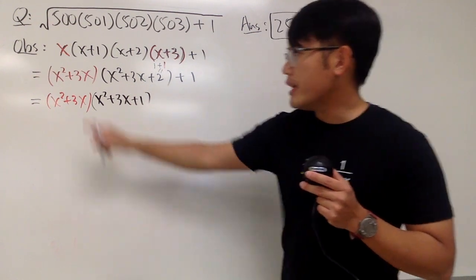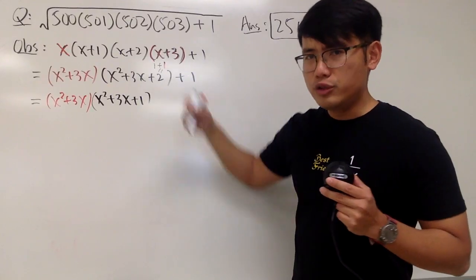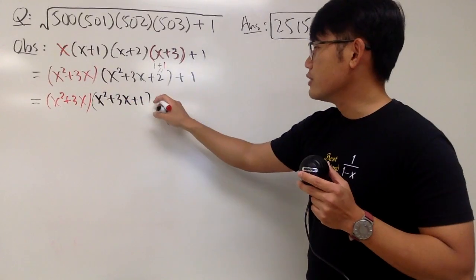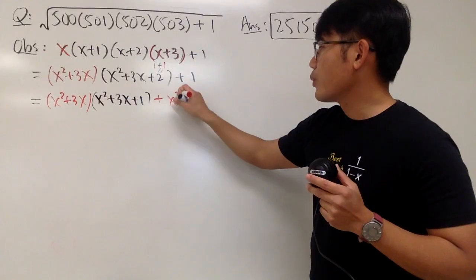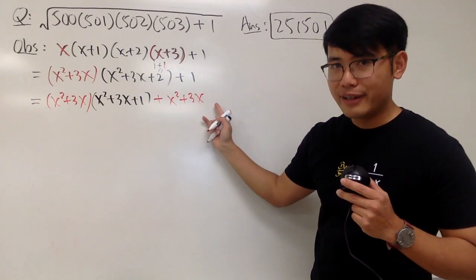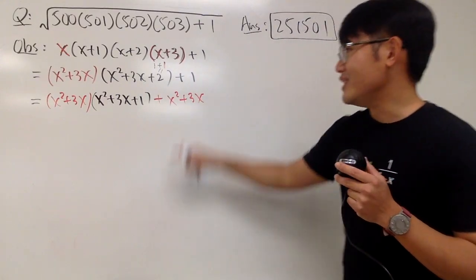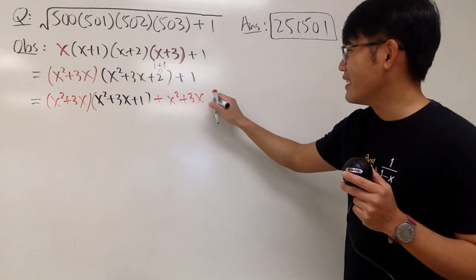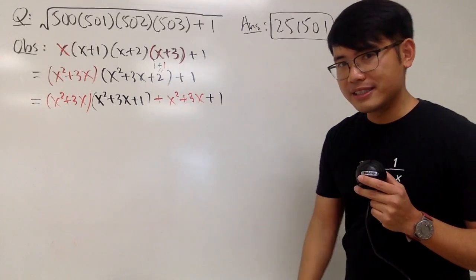And then, we'll take this times the 1, which is just that by itself, right? So we can just write down plus x squared plus 3x times 1, which doesn't matter. And then, thankfully, we have another plus 1 right here. That's very nice. And you'll see that.